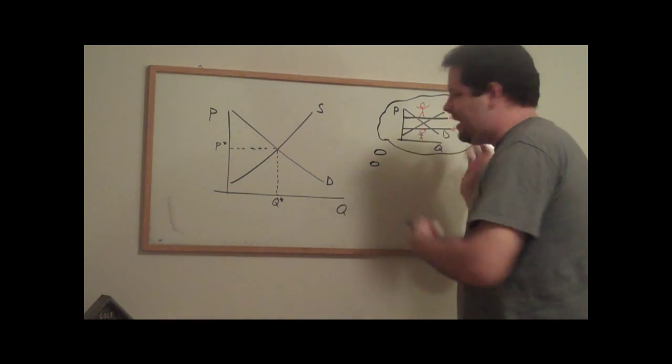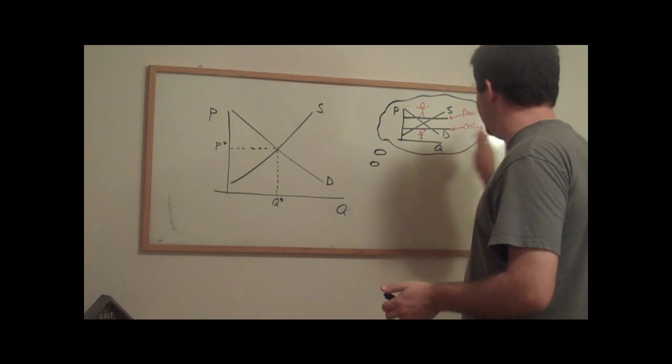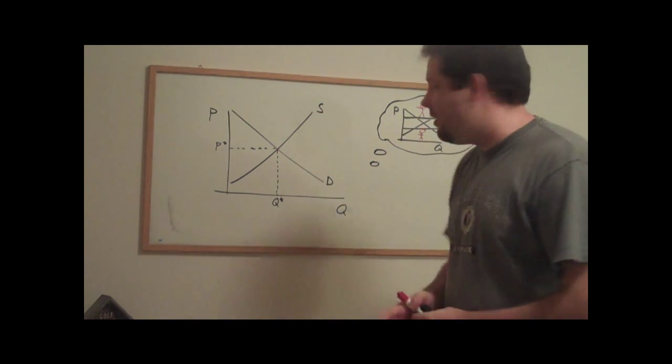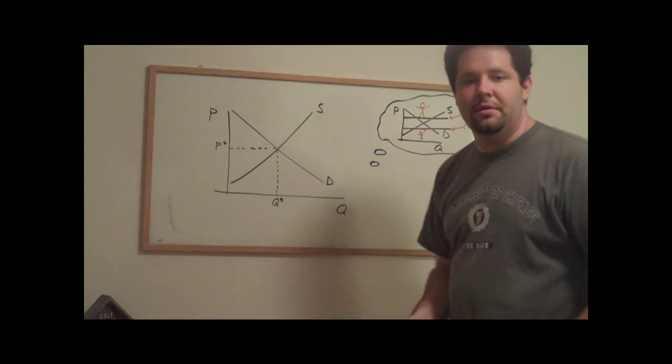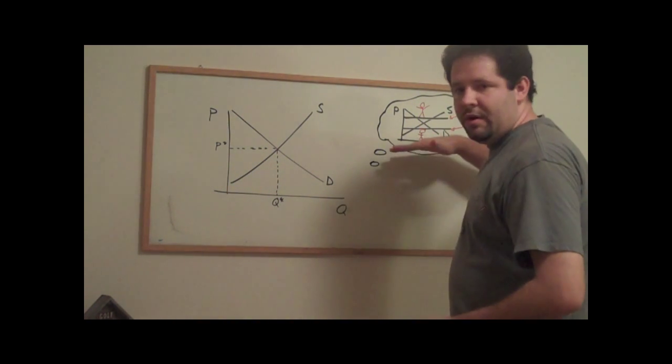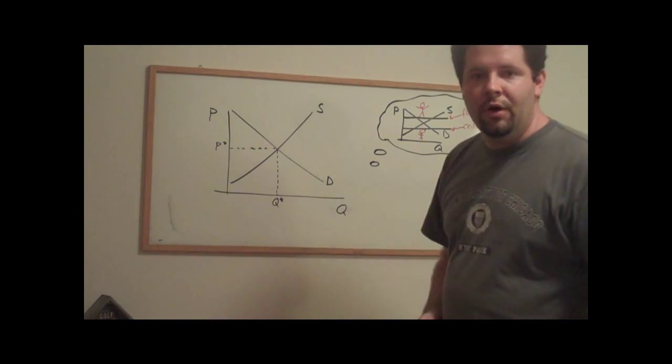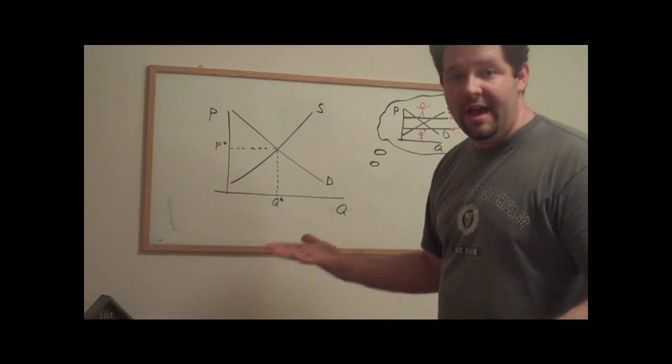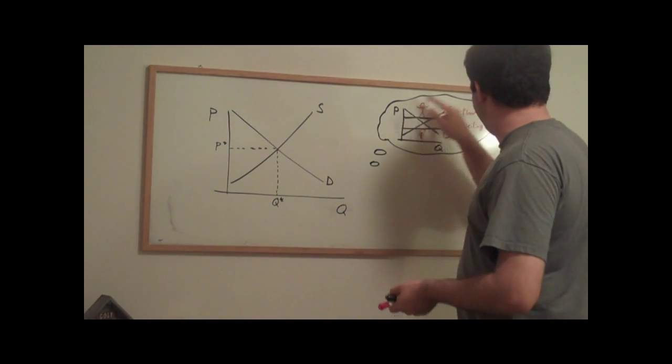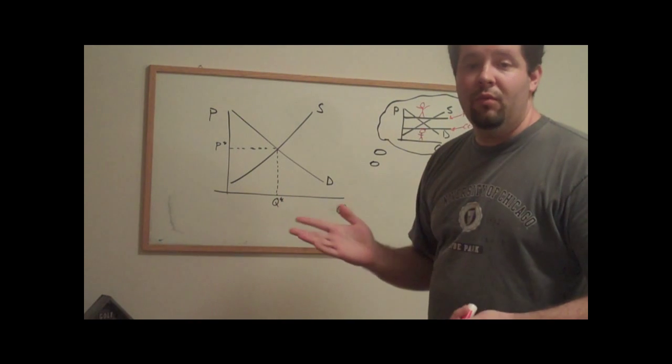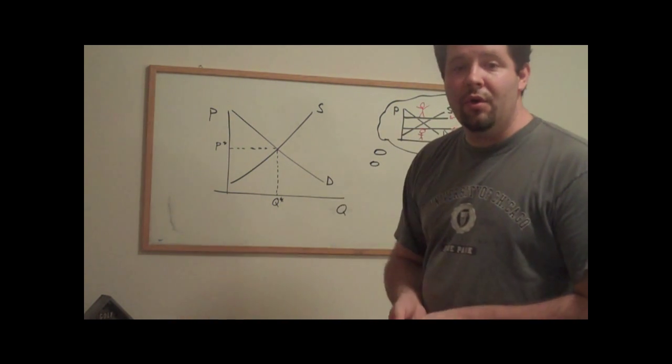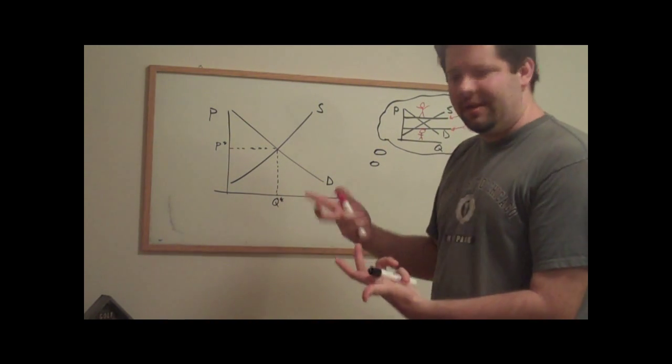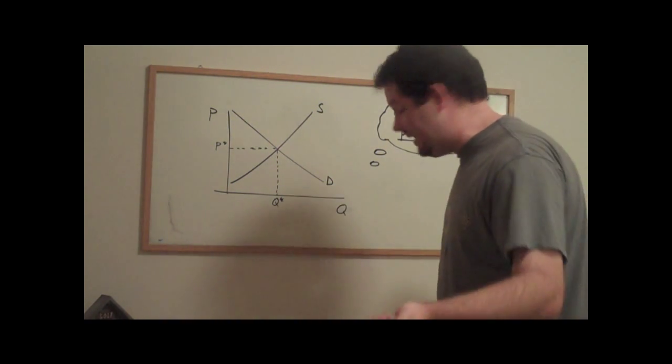While it might be counterintuitive that the ceiling is going to be below the floor, just think about it as a three-story house. The floor is going to be on the third floor and the ceiling is going to be the ceiling on the first floor. With the ceiling, we want to get to the second floor where the equilibrium would naturally take place. And when the floor is binding, we would want to get to the second floor again.